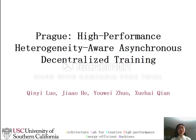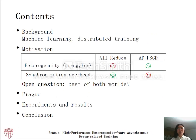Hello, my name is Qin Yi. I am going to present Prague: High Performance Heterogeneity Aware Asynchronous Decentralized Training. This work was done at the University of Southern California. In this talk, I will first give a brief background introduction on machine learning and distributed training, then discuss two existing algorithms with prominent strengths and weaknesses. The open question is: can we get the best of both worlds? To answer that, we propose Prague. I will explain the key ideas, show promising experiment results, and finally conclude the talk.